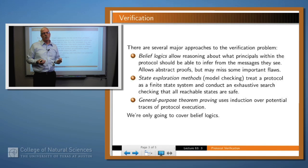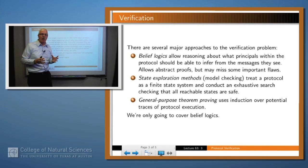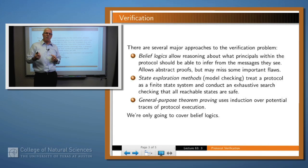There have been other methods used — for example, state exploration, or model checking as it's also called. You somehow model the protocol and the state transitions that occur within it, and then you make an argument that certain bad things can't happen because bad states are unreachable. And that's an automated process used fairly widely.